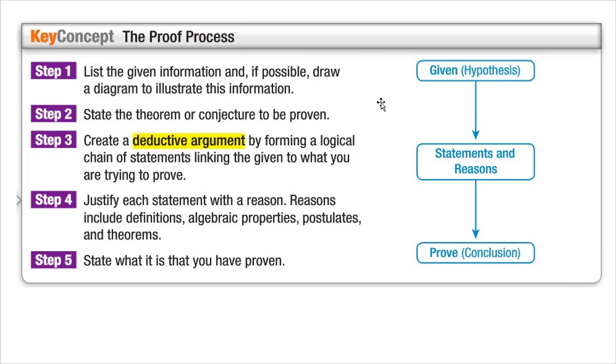List the given information, if possible, and draw a diagram to illustrate. So the first thing you list is the given in any proof and everything has to have, every proof has to have a diagram.